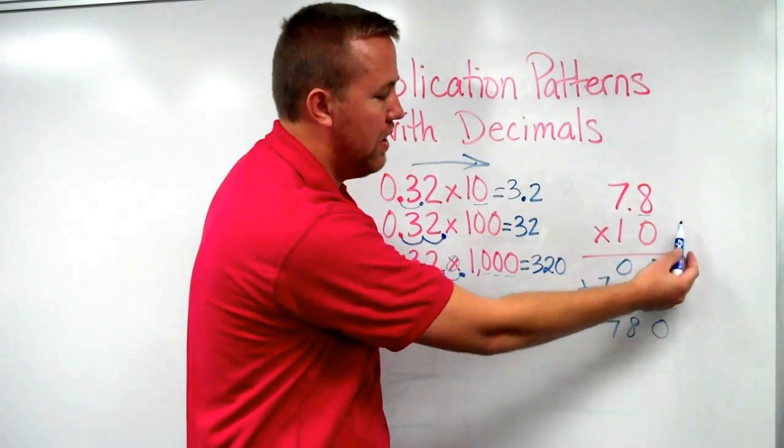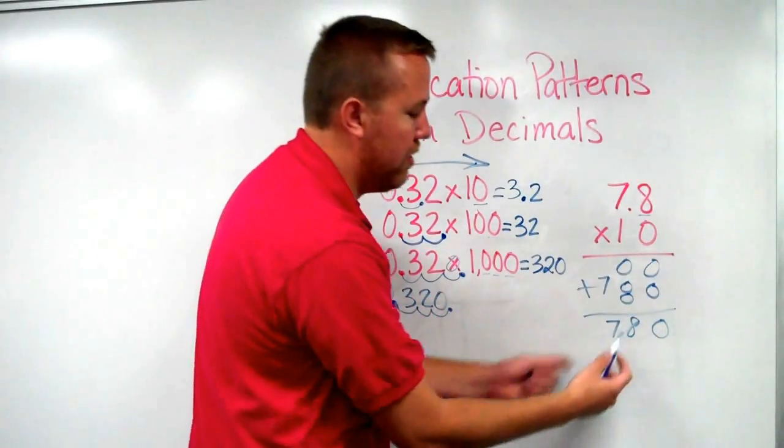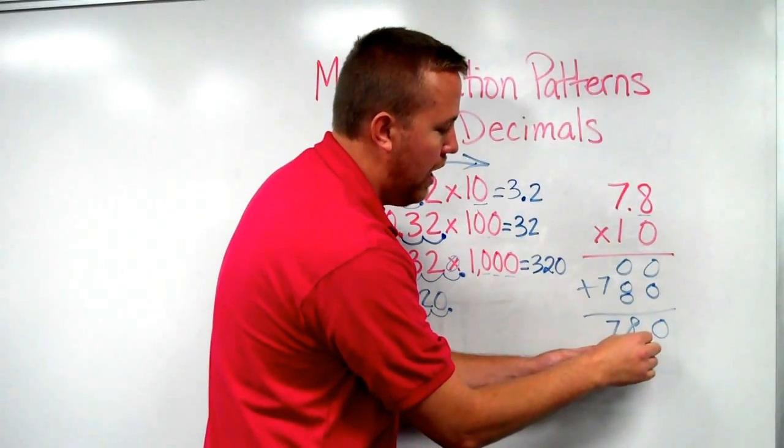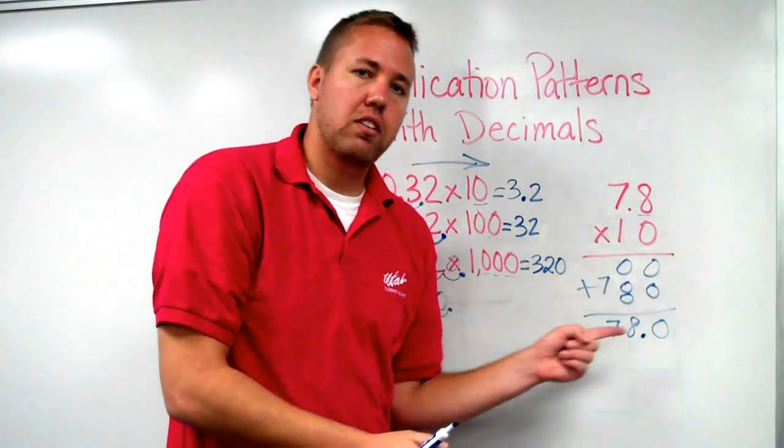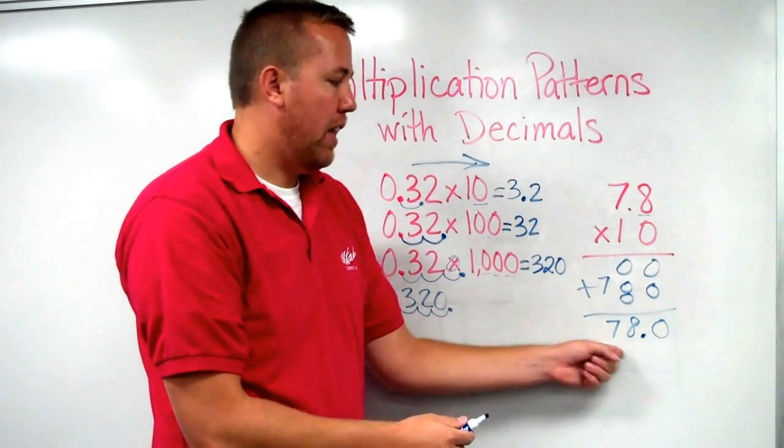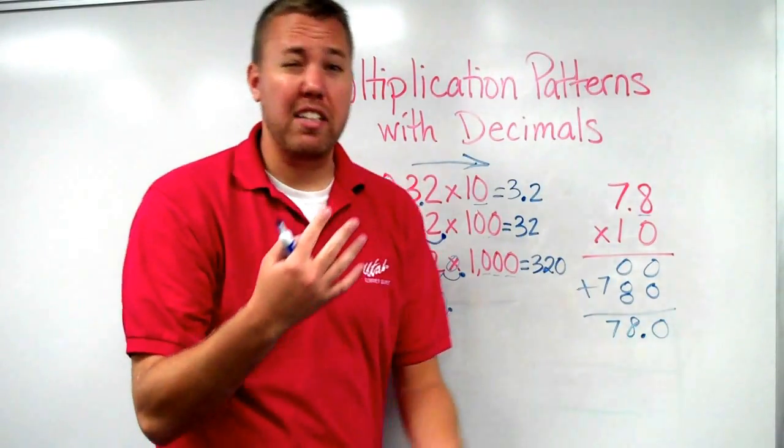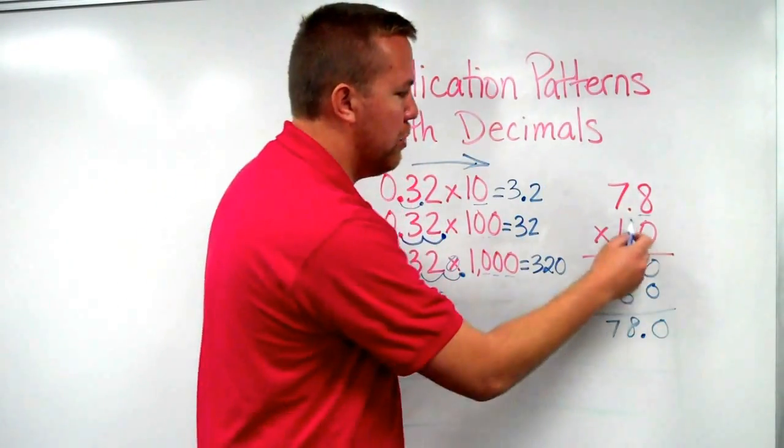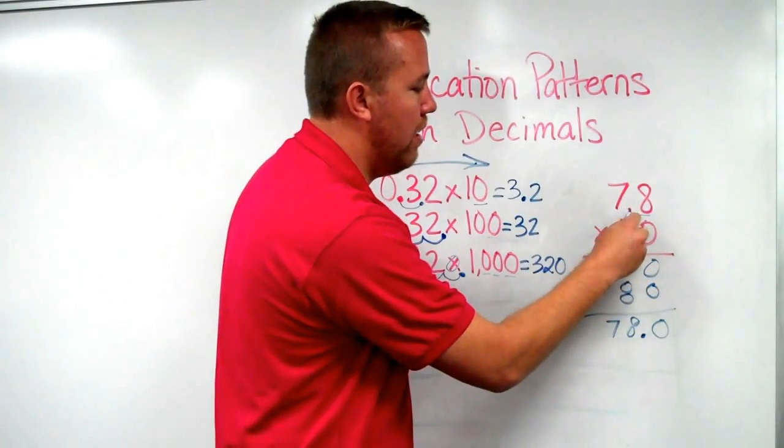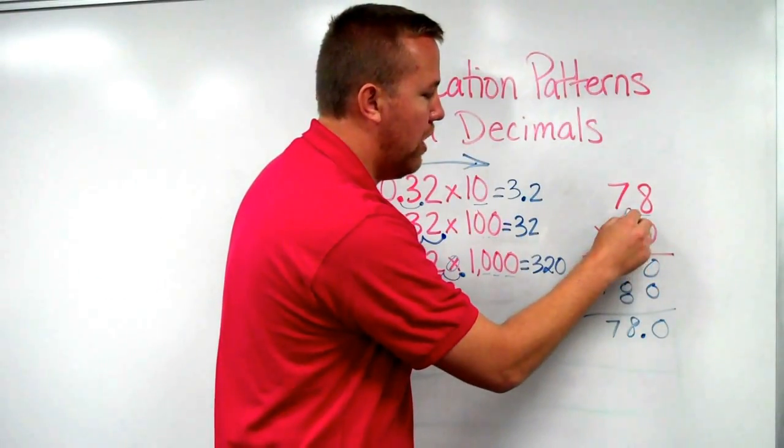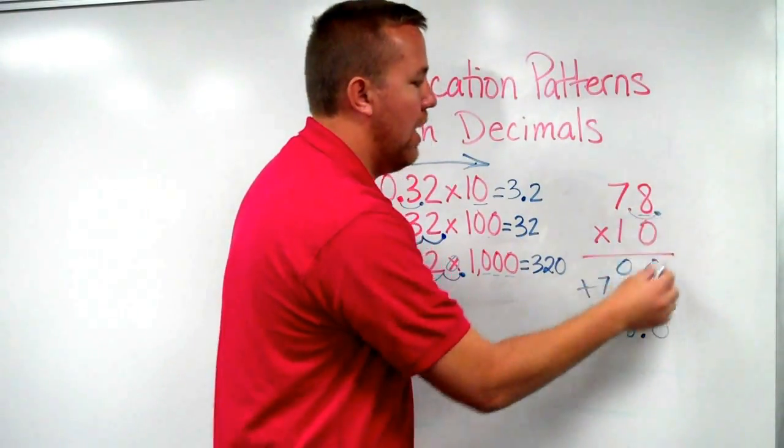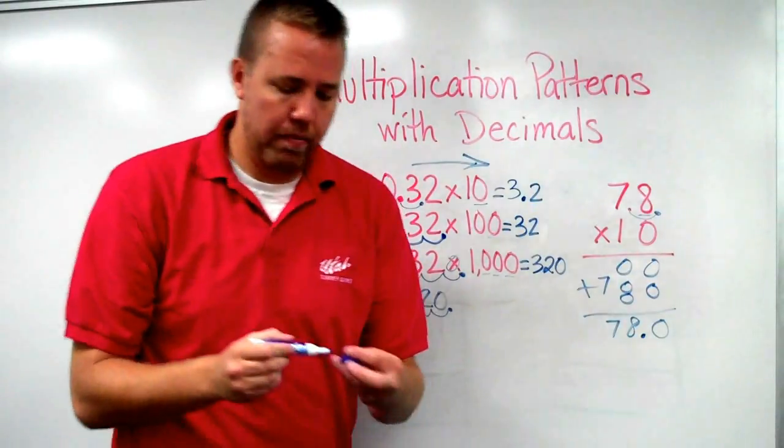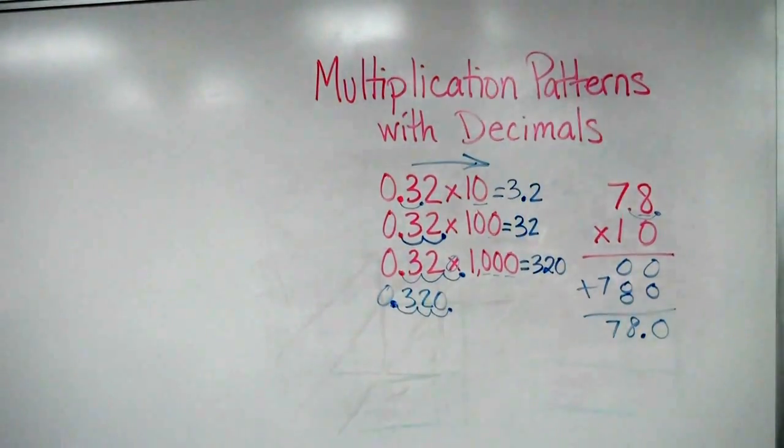So however many digits are after the decimal in the problem, same in the answer. So I have right here, I add the decimal. There's one digit to the right of that, and that equals 78. Or I can do it the easy way, and just be like, I'm timesing by 10, which means there's one zero, so I just move it one time, and I get 78. There you go, multiplying patterns with decimals.